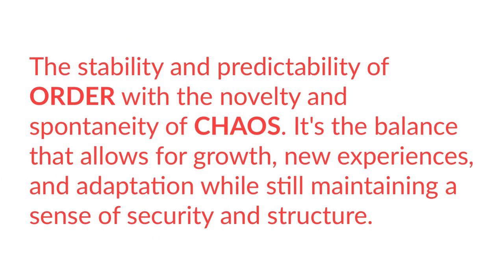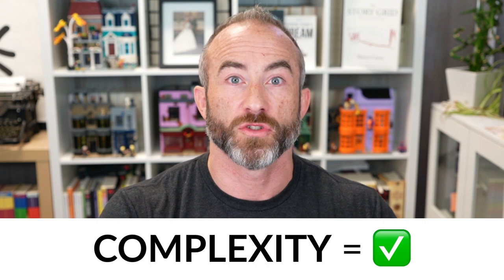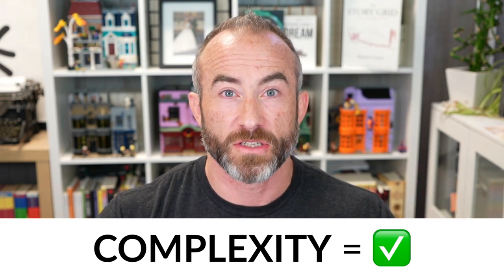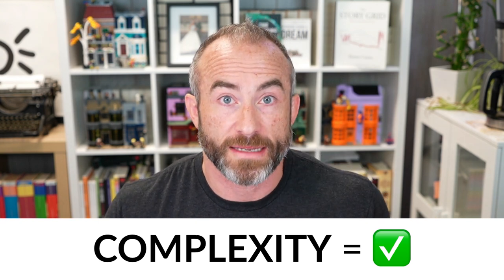Now let's look at complexity. Complexity is the mixture of both order and chaos — the stability and predictability of order combined with the novelty and spontaneity of chaos. It's the balance that allows for growth, new experience, and adaptation while maintaining a sense of security and structure. Complexity equals good. If we lean too far toward order, we never try anything new and become rigid. If we move too far into chaos, we can't feel safe and neither can the people around us. We need complexity — and that's what you should start using as a lens when planning and writing your characters.